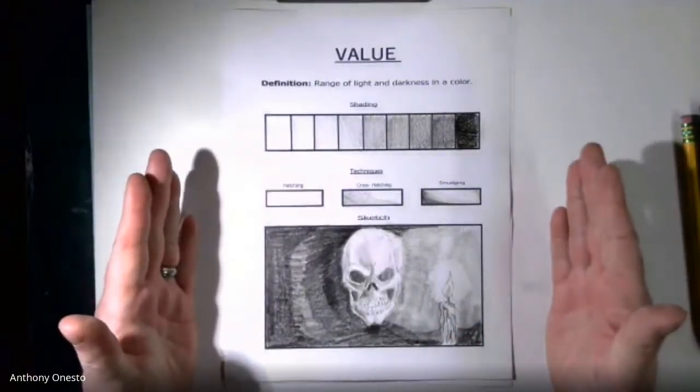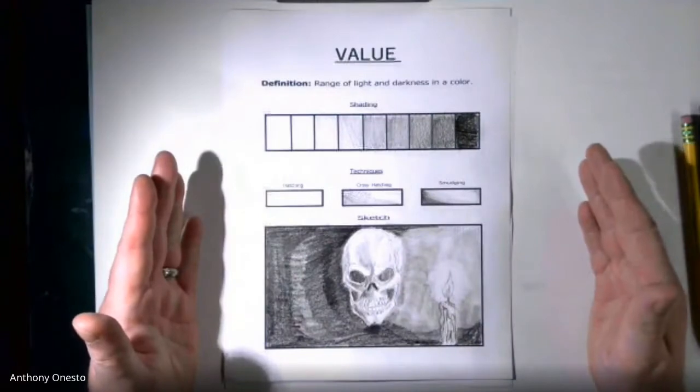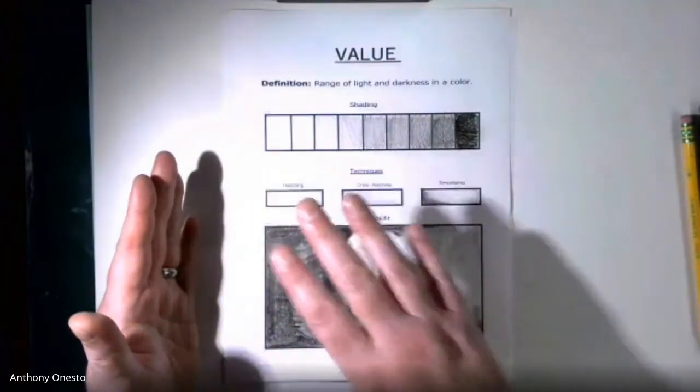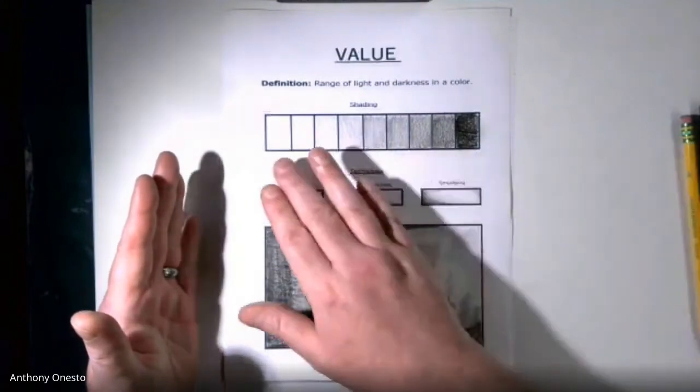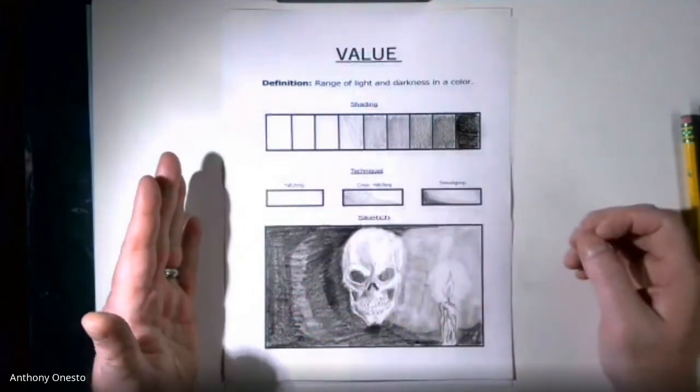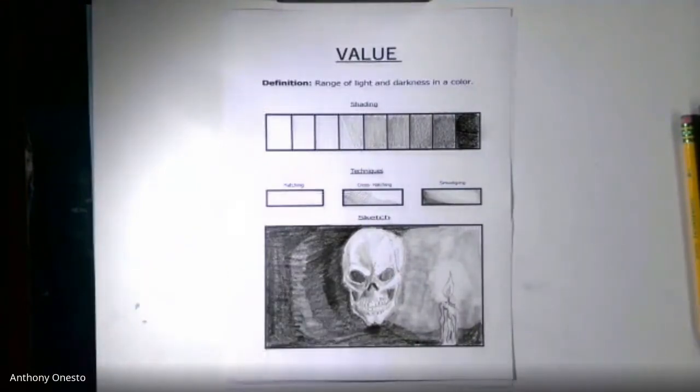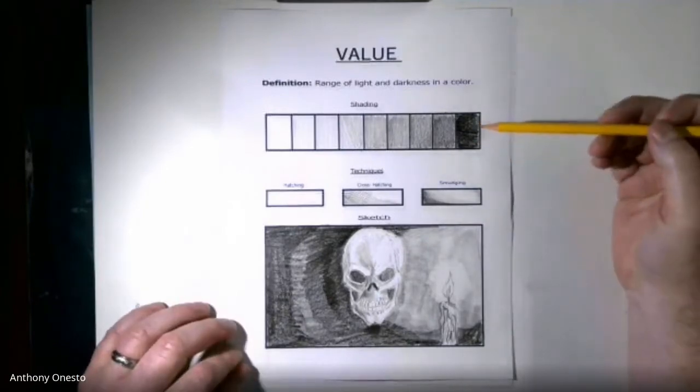Something I had always suggested to my students when they did this, tape it above where you draw. Keep it with you if you're a traveling artist. So you understand and always ask your question, am I getting from the lightest to the darkest and everything in between? And these things help to remind you, light, medium, dark. Is that all the colors that I'm doing? And that's basically the definition of value. The range of light and darkness within a color within your drawing. It gives that perspective, that little more, that touch of realism.